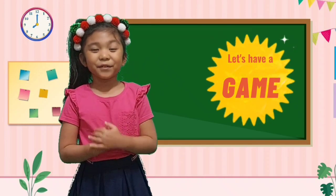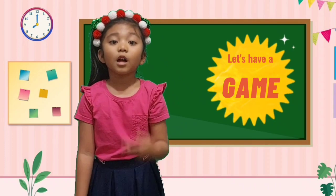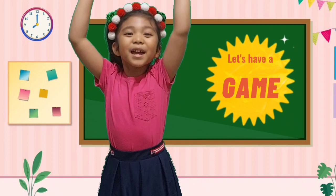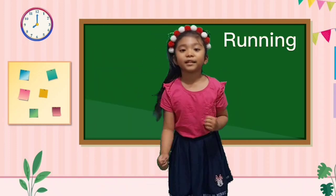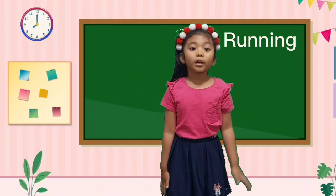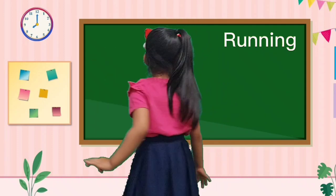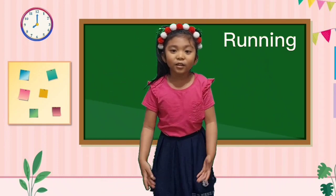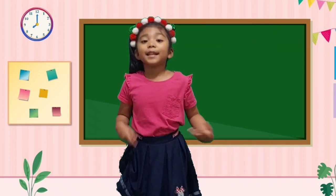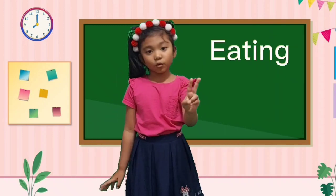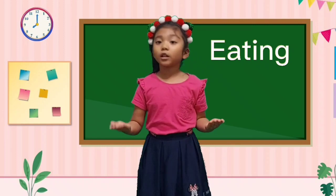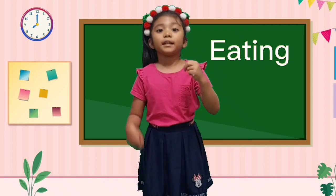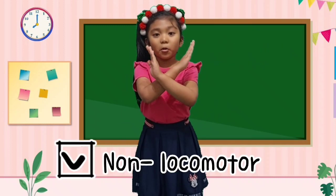So now let's have a game to see if you remember locomotor and non-locomotor. Are you ready? Let's do it! The first one is running. Is it locomotor or non-locomotor? Can you choose it? Three, two, one. And the answer is locomotor movement! Let's go to number two — eating. Is it locomotor or non-locomotor? Three, two, one. And the answer is non-locomotor. Good job!